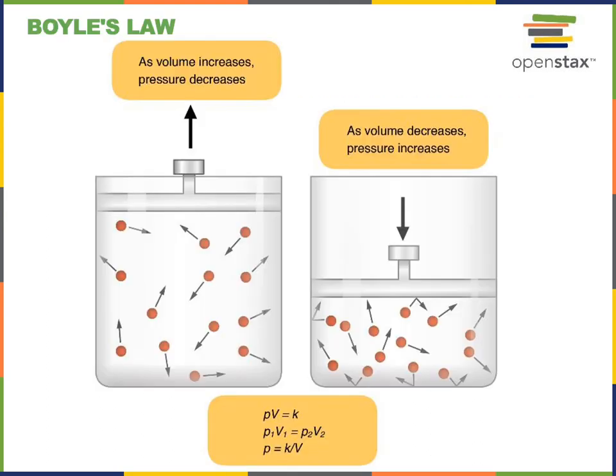To understand pulmonary ventilation — the process of drawing air in and out of the lungs — we must first understand the relationship between pressure and volume. There is an inverse relationship: if we have a constant amount of air molecules and the volume they're contained in increases, the pressure decreases. Conversely, if we decrease the volume, it will cause an increase in pressure.